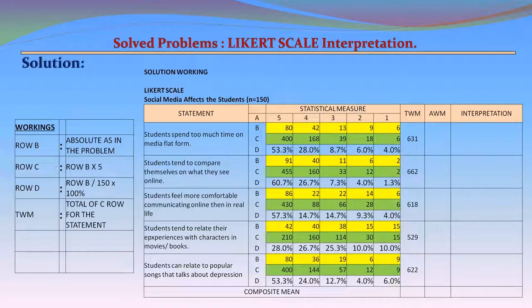Now let us calculate the TWM. For Statement 1: 400+168+39+18+6 = 631. For Statement 2: 455+160+33+12+2 = 662. For Statement 3: 430+88+66+28+6 = 618. For Statement 4: 210+160+114+30+15 = 529. For Statement 5: 400+144+57+12+9 = 622.